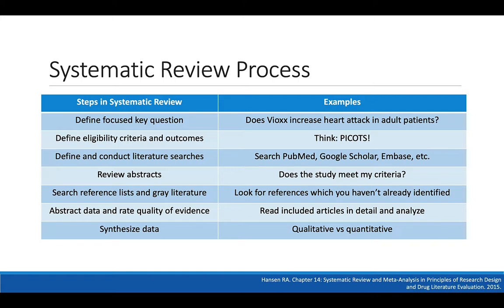Think of the PICO or PCOTS framework: which population, which intervention or exposure, which comparator group, and which outcome. We also have to think about timing and study setting, because for meta-analysis we don't want to pull studies that are too different from one another. Then we define and conduct literature searches, searching every conceivable academic database to make sure we're identifying every study that's been conducted on the subject.